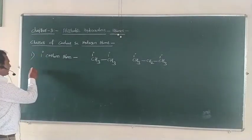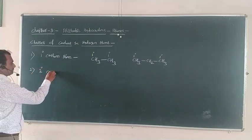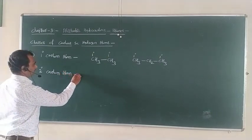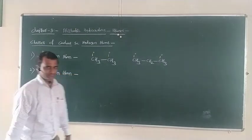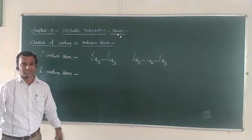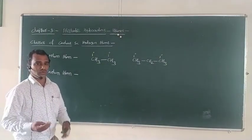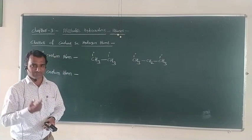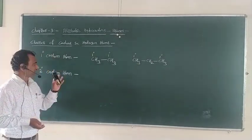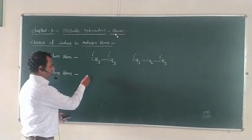The second class of carbons is called the secondary carbon atom. The secondary carbon atom is the carbon which is attached to two other carbon atoms. If a given carbon is attached to two more other carbon atoms, then that carbon atom is called the secondary carbon atom. Let us study a simple example using an alkane.